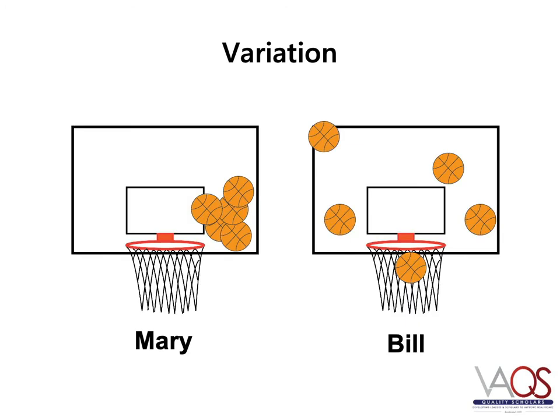Here's another example of variation using free throws. Although Mary's free throws do not result in points, she has little variation in her shots and may become an excellent free throw shooter with a few modifications to her shot. Bill, on the other hand, occasionally gets the ball through the hoop, but will have much more work to do to become consistent. Often in healthcare, we encounter people who make decisions about which processes and outcomes require improvement based on a single data point, and assume that single data point represents the system's performance. As this example shows, it is important to examine data over time to get a true idea of whether the performance seen is acceptable.